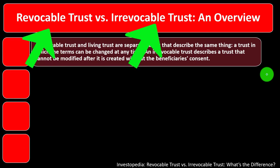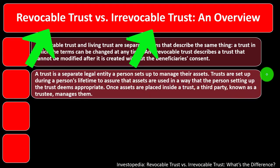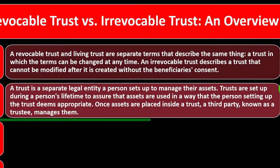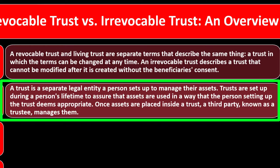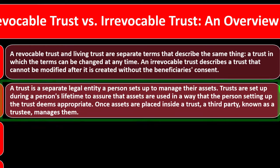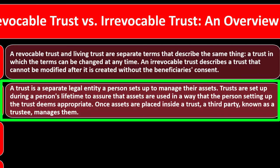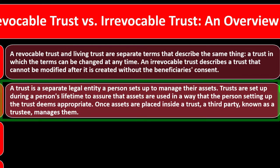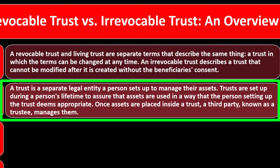The line between being able to revoke a trust and not being able to is important in estate planning. A trust is a separate legal entity a person sets up to manage their assets. Trusts are set up during a person's lifetime to ensure assets are used in a way the person deems appropriate. Once assets are placed inside a trust, a third party known as a trustee manages them.